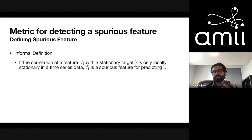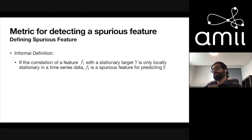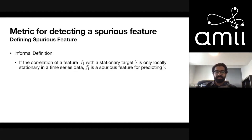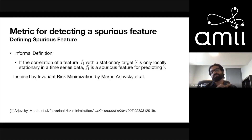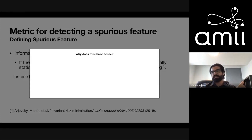By locally stationary I mean that in some parts of the MDP, F1 has a positive correlation with the target, and in other parts of the MDP the same feature has a negative correlation or no correlation with the target. This is inspired by a paper by Martin Arjovsky about invariant risk minimization — I would say this definition is 90% the same as his, with a small modification to make it work for the online learning case.